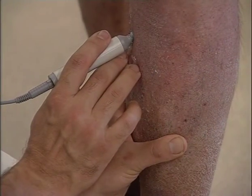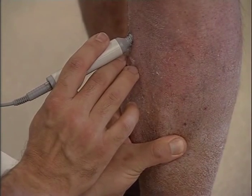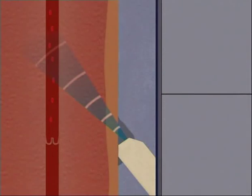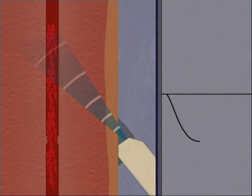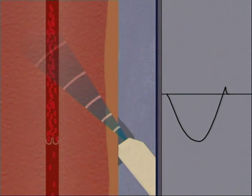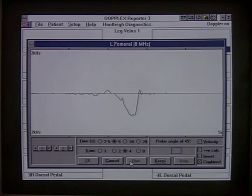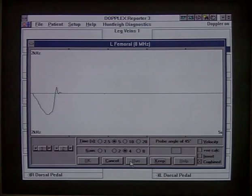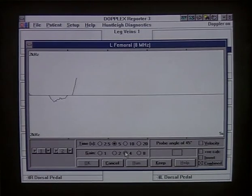In a vein, the Doppler waveform will indicate valvular incompetence. With the Doppler probe pointing towards the heart, if the valves are functioning correctly, then anti-grade flow, that is flow away from the probe, is expected with no retrograde flow. If retrograde flow is detected, then this is indicative of valvular incompetence. This is a normal signal with anti-grade flow and no reflux. This abnormal signal shows enormous retrograde flow due to valvular incompetence.